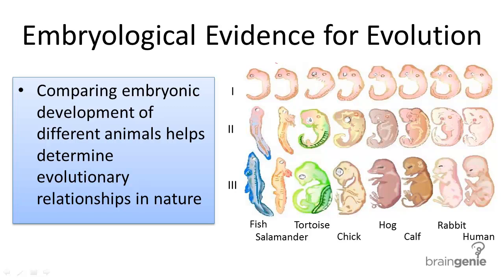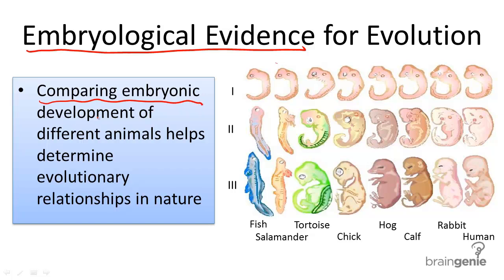So where else is there evidence for evolution? A great deal of evidence for confirming the relatedness of all organisms can be found using techniques used in comparative embryology. Comparative embryology is the study of embryos and their development in different animals, and it helps to determine evolutionary relationships in nature.